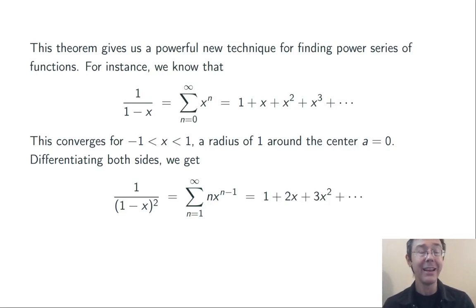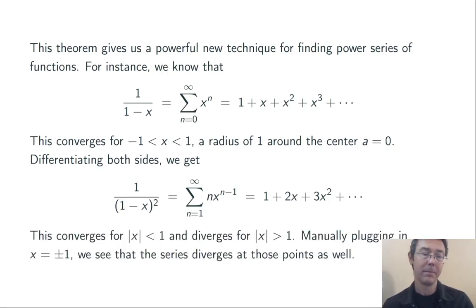Notice that we're starting at n equals 1, otherwise that nx to the n minus 1 will have an x to the negative first power, which of course shouldn't be there when we're differentiating a polynomial. The radius of convergence is the same, so we know it's going to converge from x equals negative 1 to x equals positive 1. We just have to check the endpoints separately.